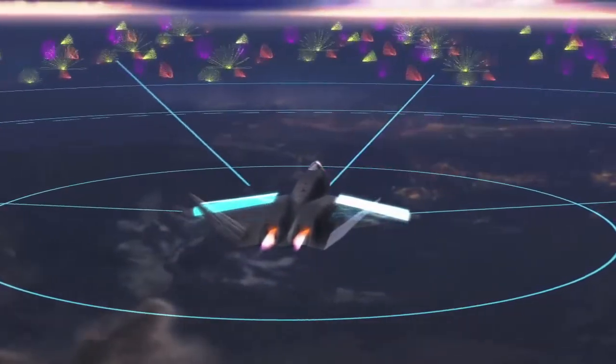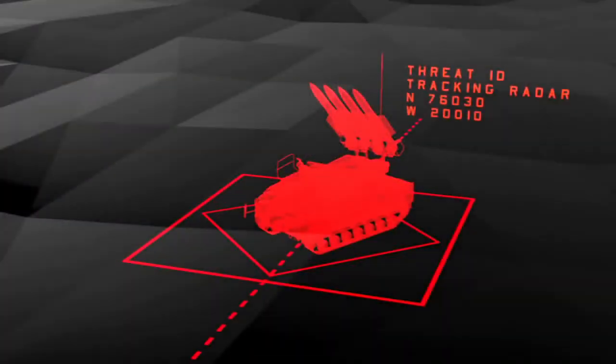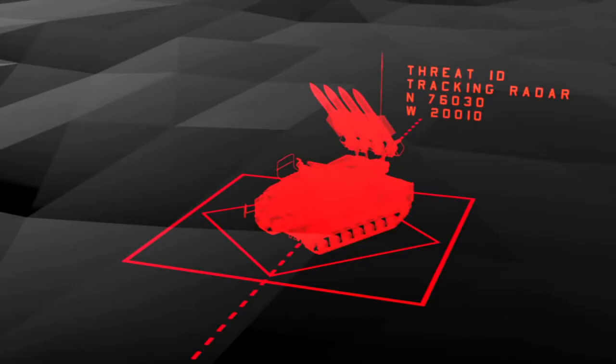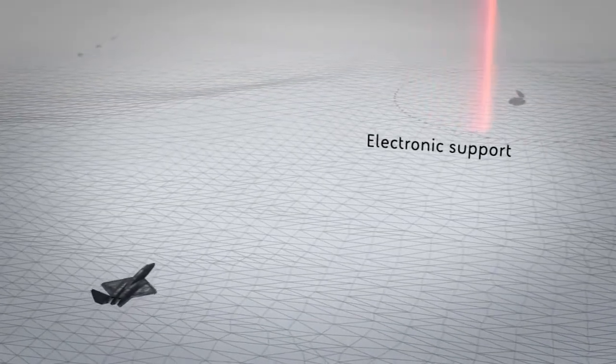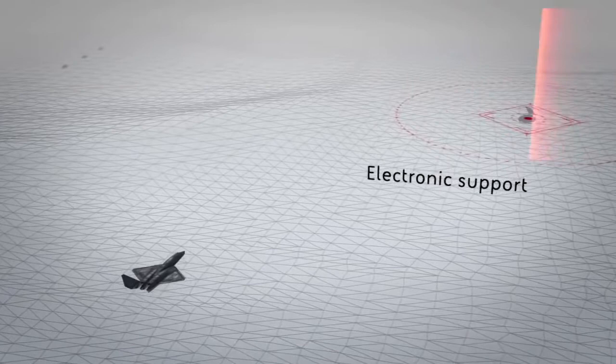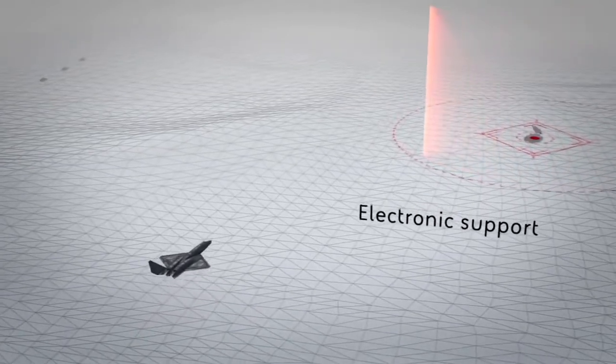Each capability area uses different techniques to create an advantage against the enemy. Electronic support intercepts, identifies, and locates energy signals emitted from threats.